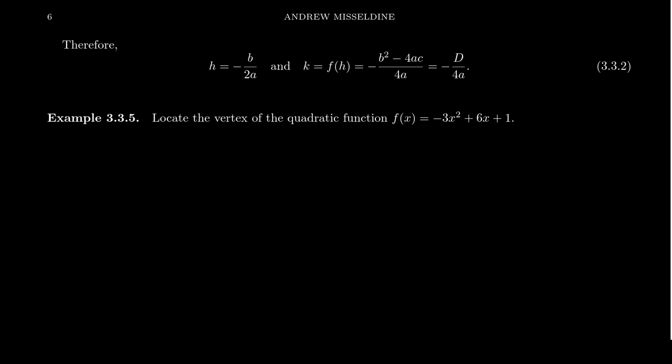So I have these summarized here on the screen. h = -b/(2a). If you want to, you can do negative discriminant over 4a or more likely just f(h) gives us the k value.